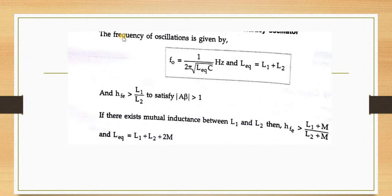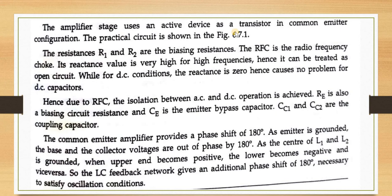The amplifier stage uses an active device — a transistor in the common-emitter configuration. R1 and R2 provide biasing resistance. The RFC (radio frequency choke) has very high reactance for high frequencies, so it acts as an open circuit for AC; for DC conditions its reactance is zero, causing no problem. This achieves isolation between AC and DC operations.